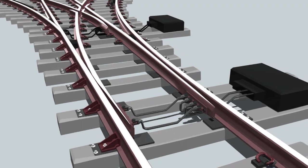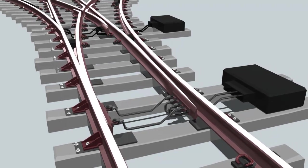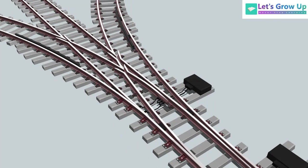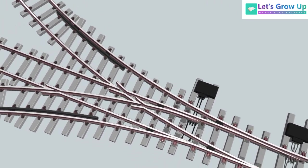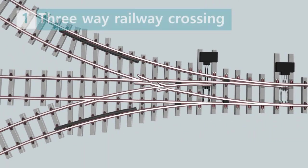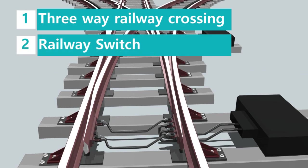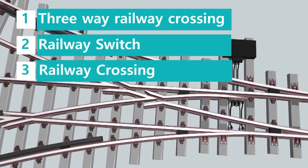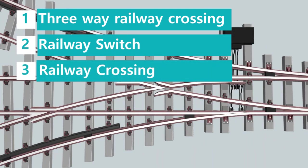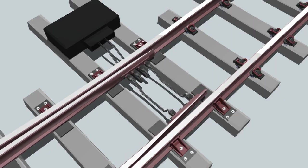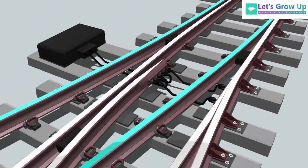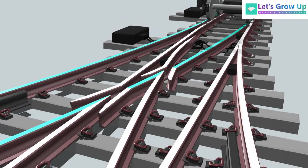Railway track change is a very interesting part of learning — we have seen it but don't know how it happens. In this lesson we will learn three key points: number one, three-way railway crossing; number two, railway switch; and number three, railway crossing. Railway switch, also known as railroad switch or rail turnout switch, is an important component of track.